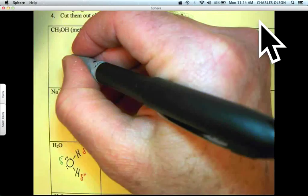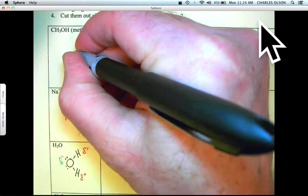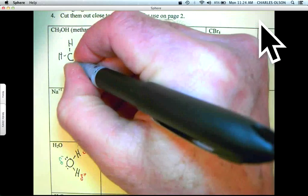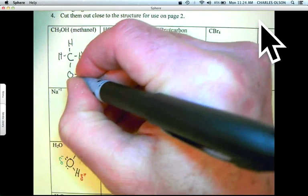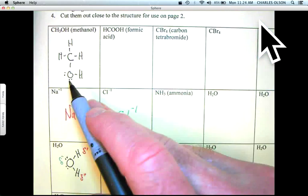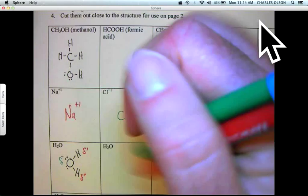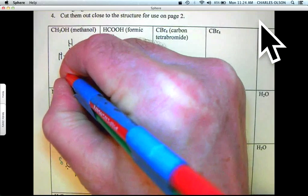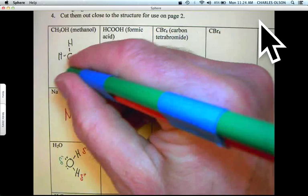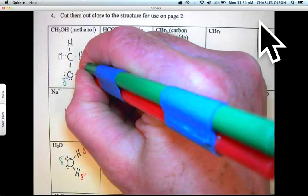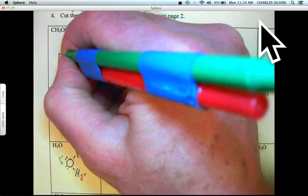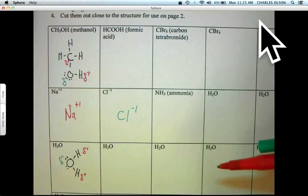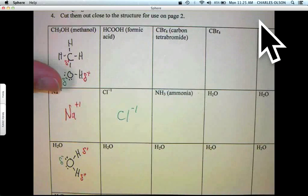Now let's do methanol. Here we've got CH3OH. Put in our lone pairs for oxygen. Now let's put the charges in. Oxygen, being the more electronegative, is going to have a partial minus charge. And the bonds give the hydrogen a partial positive, also the carbon a partial positive. And there's methanol—the hydroxyl group is very polar.